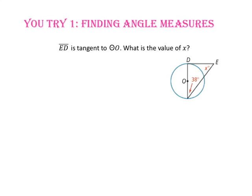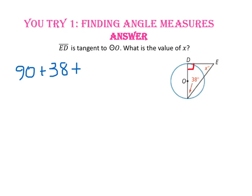Pause the video and do you-try number 1. Segment ED is tangent to circle O. What is the value of X? Since segment ED is a tangent, we know that the radius is going to be perpendicular to the tangent at point D. So angle EDO is 90 degrees. Since the polygon is a triangle, we know the sum of the interior angles is 180 degrees. So we can take 90 plus 38 plus X and it will equal 180.